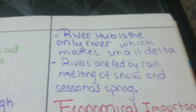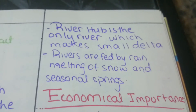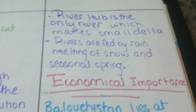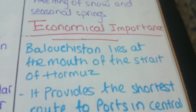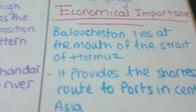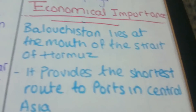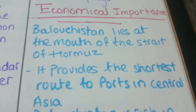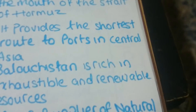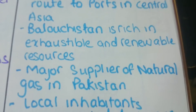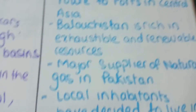River Hub is the only river which makes small deltas. Rivers are fed by rain, melting snow, and seasonal streams. Coming to economic importance, it does not have much economic importance due to its terrain, but it lies near the Strait of Hormuz and provides the shortest route to ports in Central Asia.